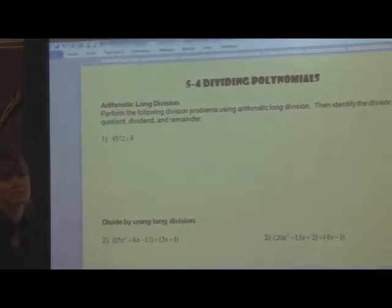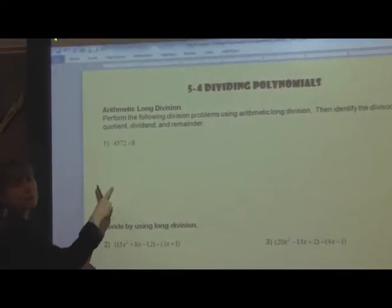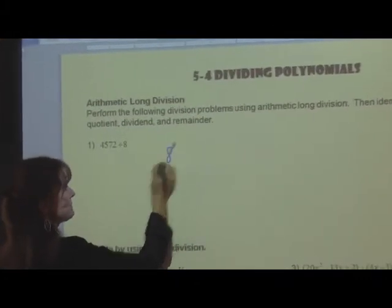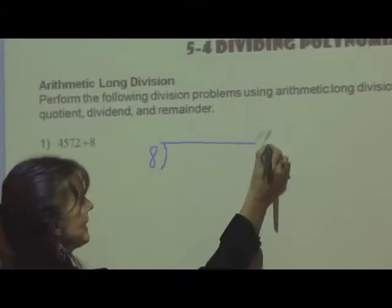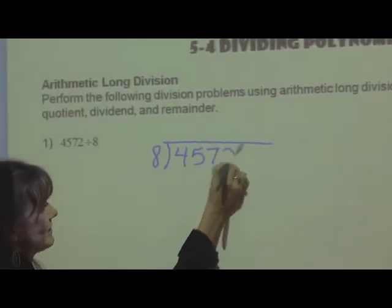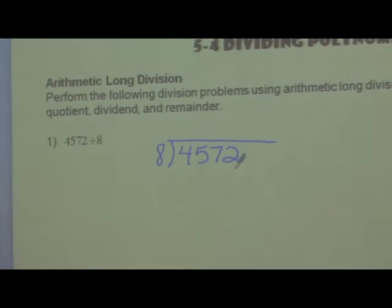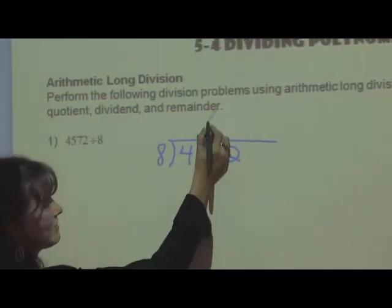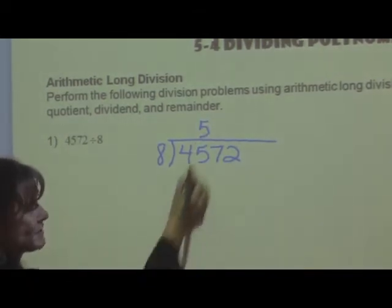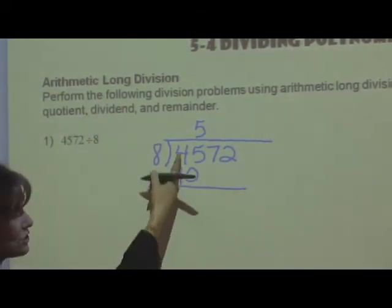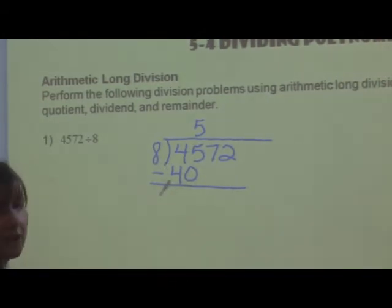Now, first, before we divide polynomials, let's remember what it's like to long divide because it's been a while. Remember that you divide 8 into 4,572. So just like normal division, 8 would go into 45 five times. 5 times 8 is 40. Now notice, to do this problem, you have to subtract.